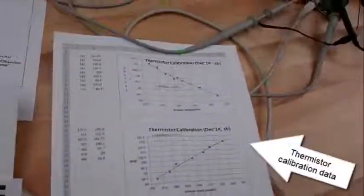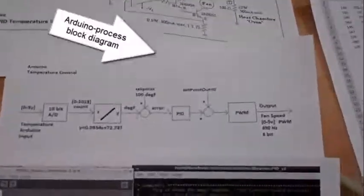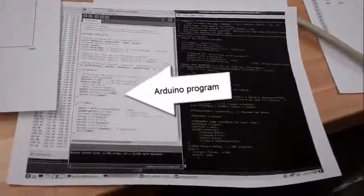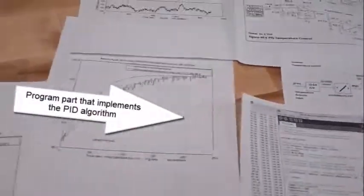There are thermistor calibration data, electrical circuit diagram, Arduino process block diagram. The Arduino program, Arduino output, and the program part that implements the PID algorithm.